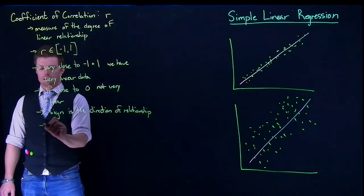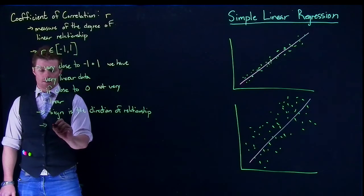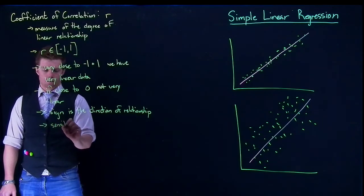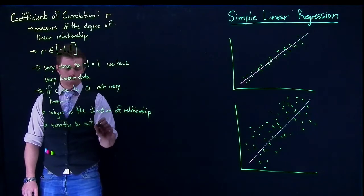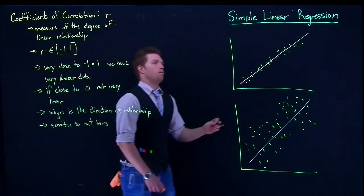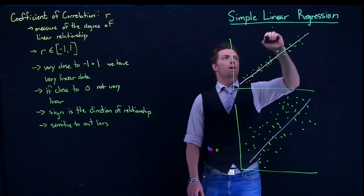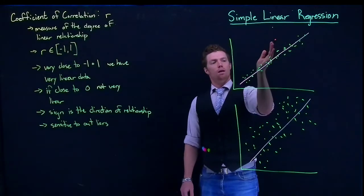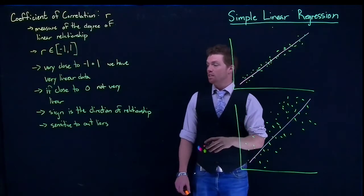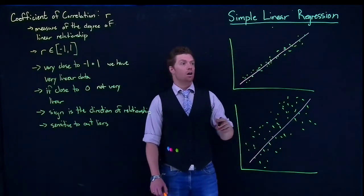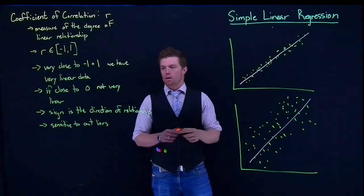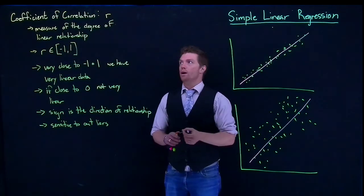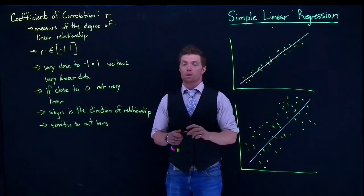And then just as a caveat, it is sensitive to outliers. So if we had a data point way up here, this would pull our line and it would kind of decrease our r, even though most of our data points are actually super tight. So that's kind of what r is, our coefficient of correlation.